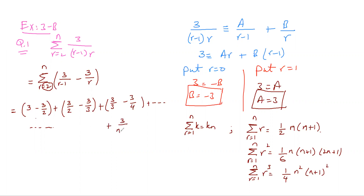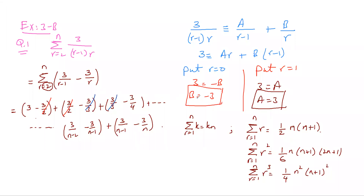Then I put r=n: this is going to be 3/(n-1) minus 3/n — that is the last term. The second last term, when r = n-1, gives 3/(n-2) minus 3/(n-1). Now if you open these brackets, minus 3/2 cancels with 3/2, minus 3/3 cancels with 3/3, and so on. The 3/(n-1) cancels with minus 3/(n-1).